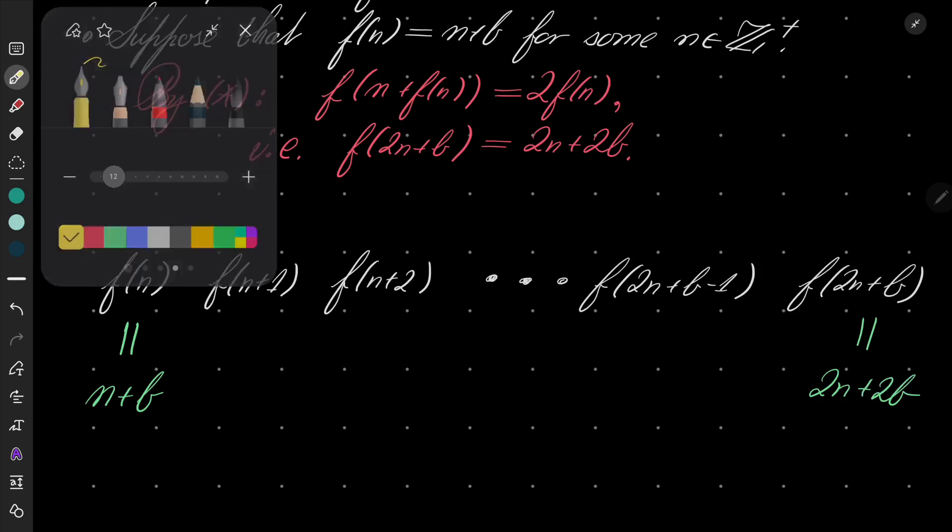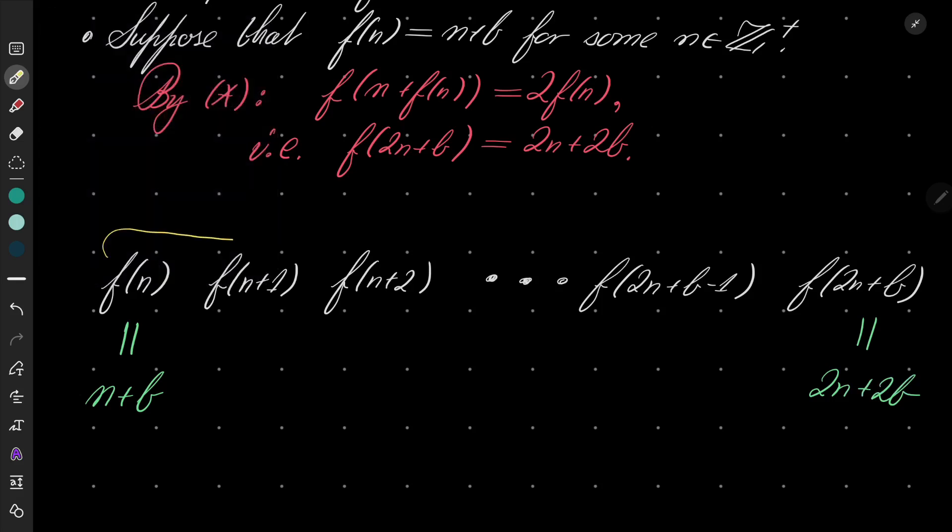And let's also notice that in our upper row, here we have from n to 2n+b, we have exactly n+b+1 different values. Why different? Because our function is strictly increasing. So in our upper row, we have n+b+1 different values.